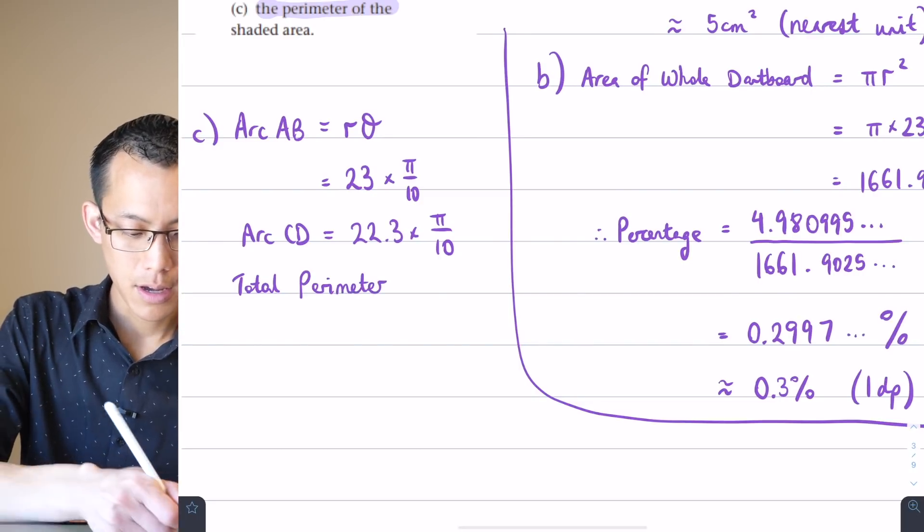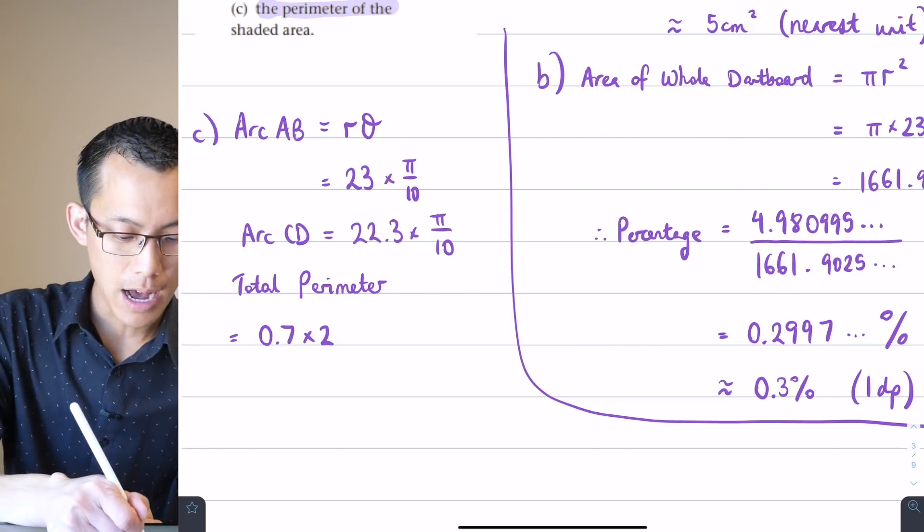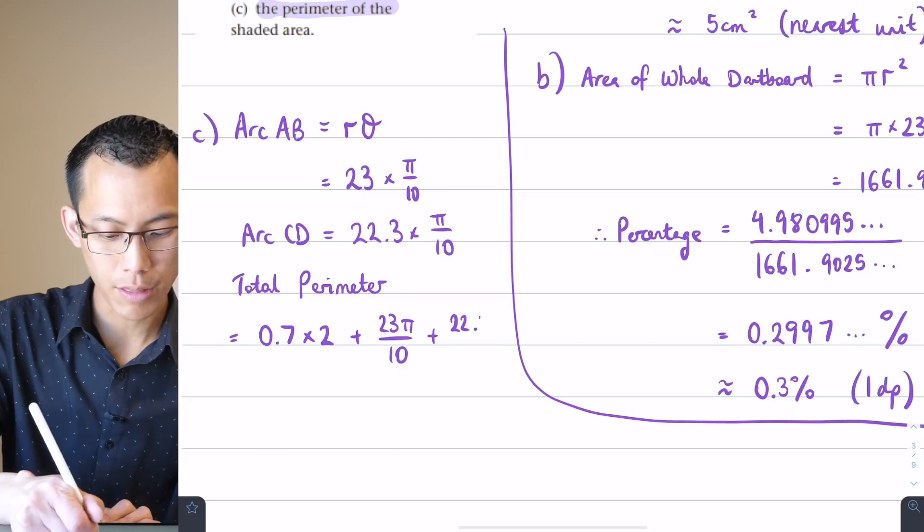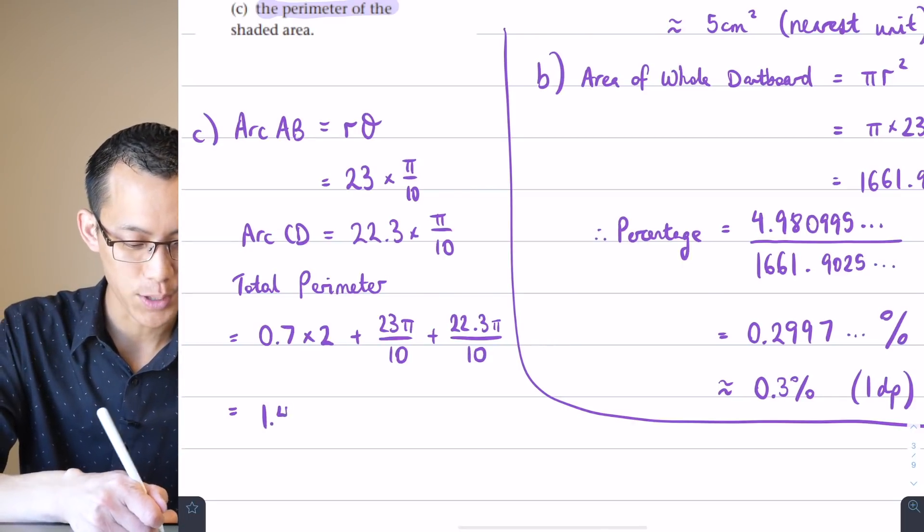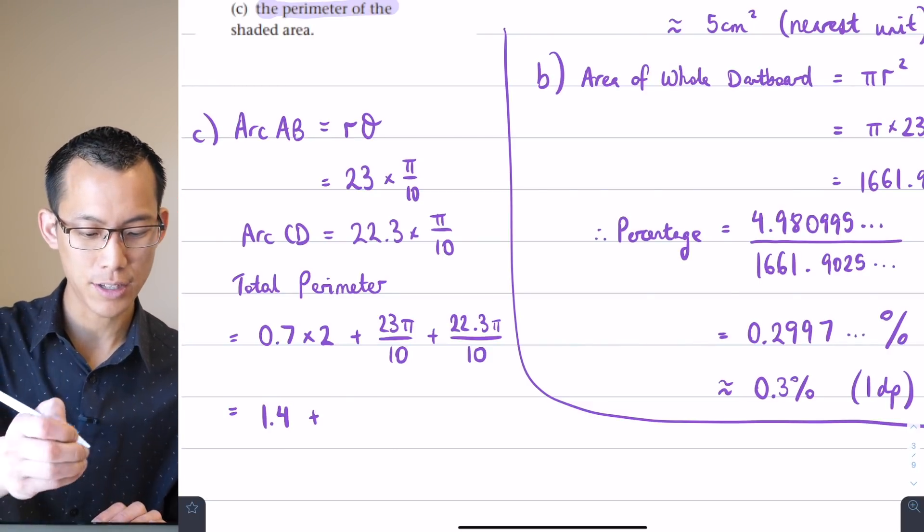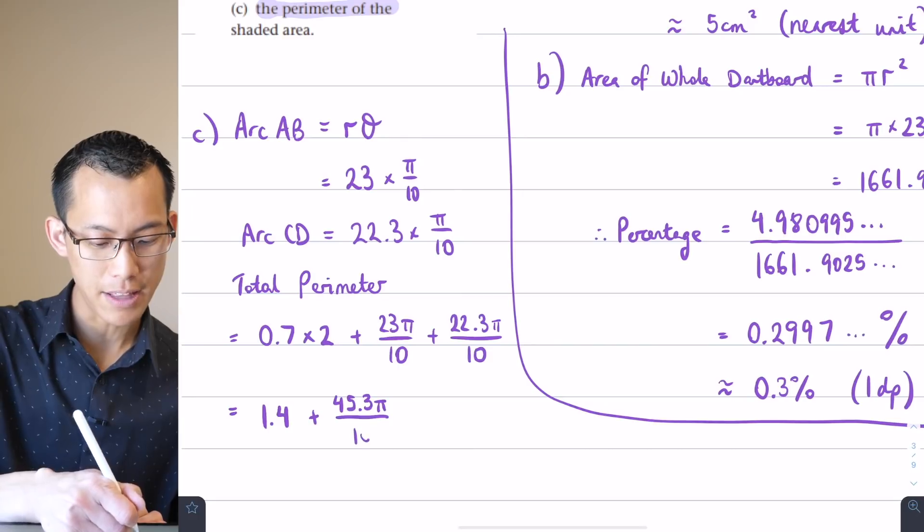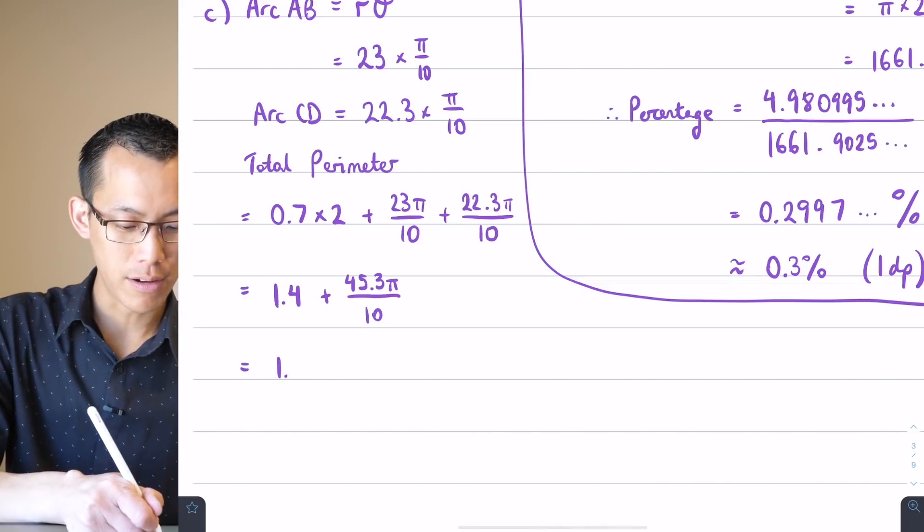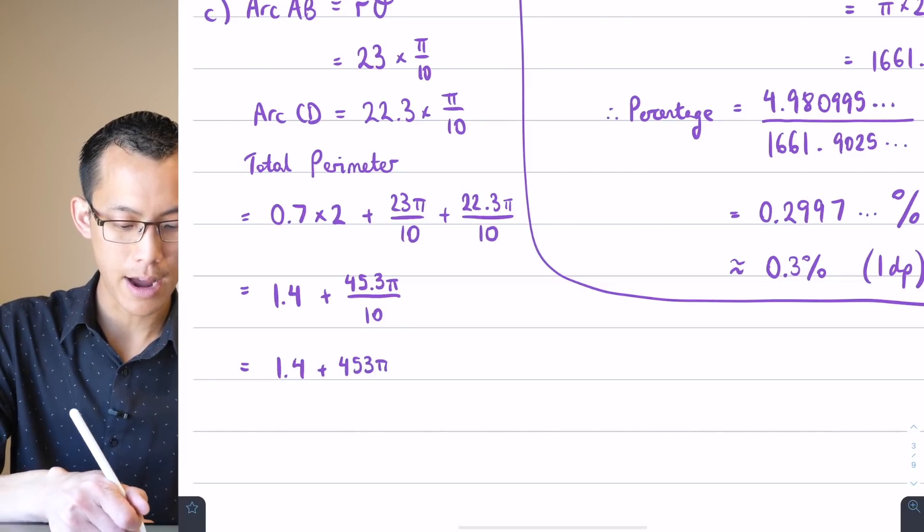I don't even need to do any evaluation beyond that. So I'm going to say total perimeter equals, let's do each of the pieces. It's going to be that 0.7. It happens twice for each of the left and the right edge. Then you're going to get the 23 pi on 10 and then you're going to get the 22.3 pi on 10. So let's just tidy up ever so slightly. This is of course going to give us 1.4. I've already got them on the same denominator. So divided by 10, both of them. So that gives me 23 plus 22.3 is 45.3.